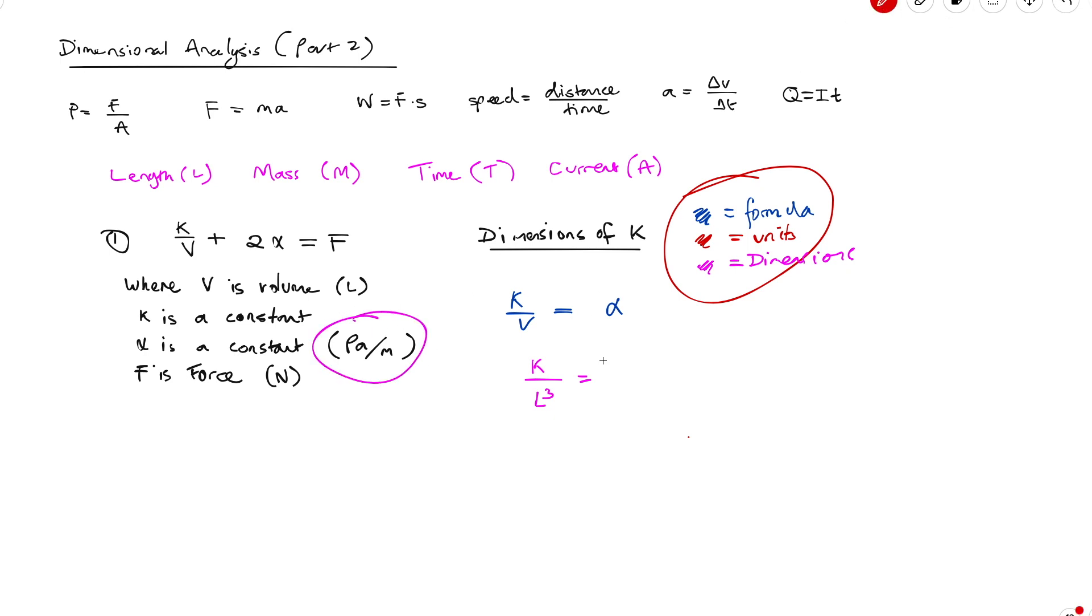With α, it's a little bit trickier. We have to go to the units to see what we actually have to do with it. So the units at the moment are pascals per meter, and then we have to deviate out to some formulas that usually come from physics. So pascals is a unit of pressure, and we know pressure is force over area.